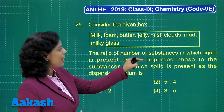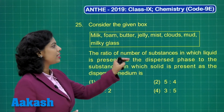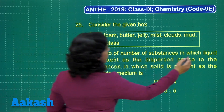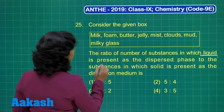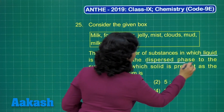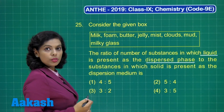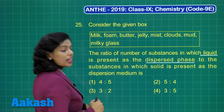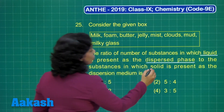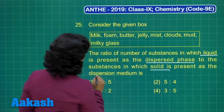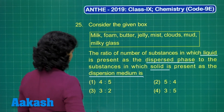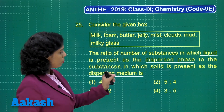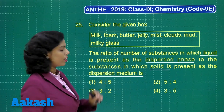We need to find the ratio of the number of substances in which liquid is present as a dispersed phase. We have to identify the substances in which liquid is present as dispersed phase, and further identify the substances in which solid is present as the dispersion medium. On the basis of that ratio, we choose the correct option.